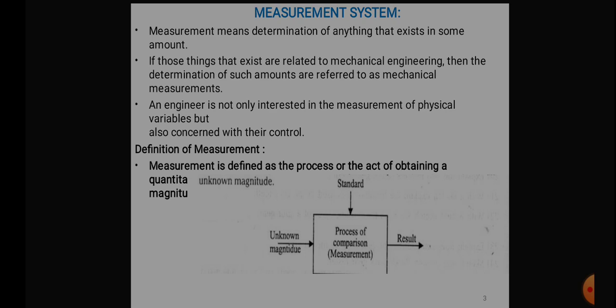And you can see this through the block diagram which is mentioned in this slide. The unknown magnitude is there, and it is involved in the process of the comparison. That is called a measurement. And this is compared with the standard. The standard is something which is accepted by everyone, which may be accepted globally or it may be accepted by the local authorities. And you will get the result.